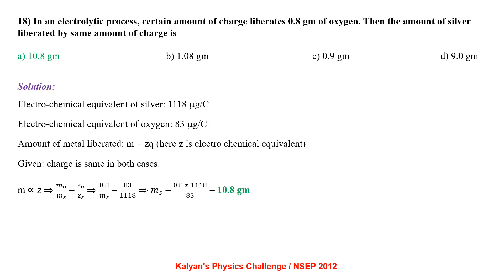In an electrolytic process, a certain amount of charge liberates 0.8 gram of oxygen. Electrochemical equivalent of silver is 1118 μg/C and of oxygen is 83 μg/C. Amount liberated M = Z × Q. Since charge is same, M is proportional to Z. So M(oxygen)/M(silver) = Z(oxygen)/Z(silver): 0.8/M(silver) = 83/1118, giving M(silver) = 10.8 gram.